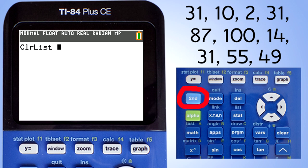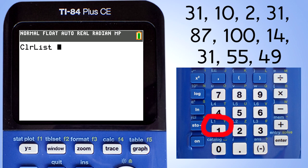This window pops up. To delete the L1 list, press the second button here and then the 1 key here. You see that L1 above the 1 key? Now the screen says clear list L1. Press the enter button here. The L1 list is now cleared.